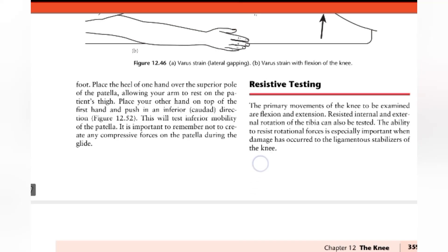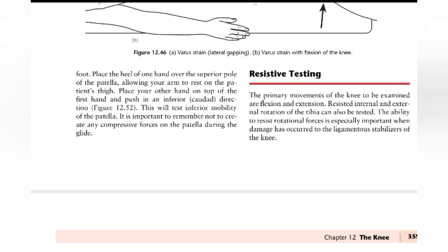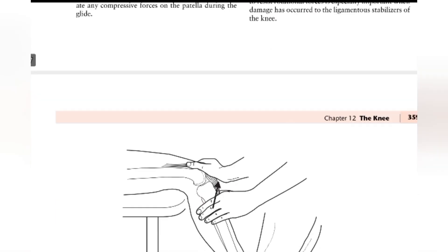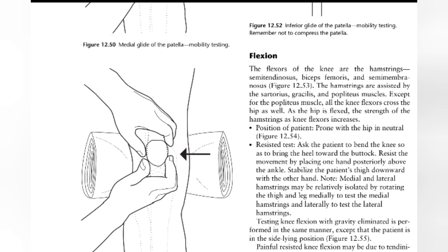Next we have resistive testing. In the primary movements of the knee, to be examined are flexion and extension. Resist internal and external rotation of the tibia. The ability to resist the rotational force is especially important when damage is present. For flexion testing, the knee flexors are the hamstring muscles — bicep femoris, semimembranosus, and semitendinosus. They are assisted by sartorius, gracilis, and popliteus. All knee flexors cross the hip as well, so as the hip is flexed, the strength of the hamstring muscles as knee flexors increases.